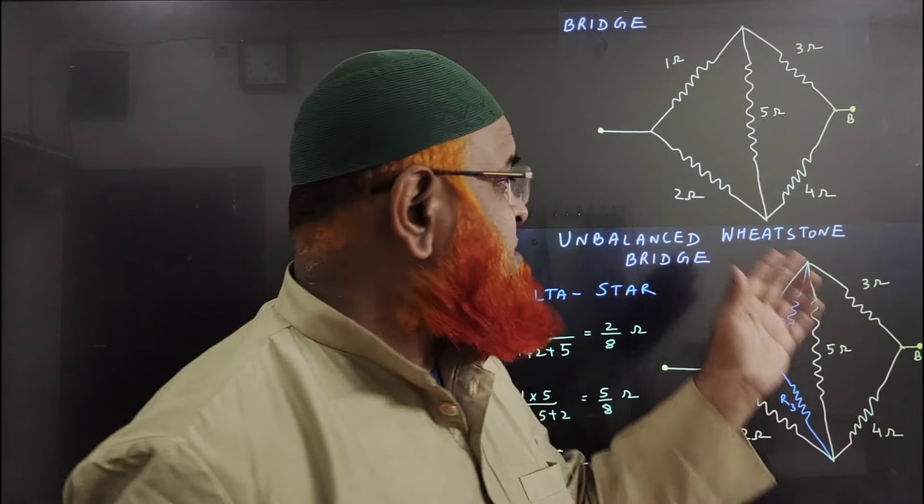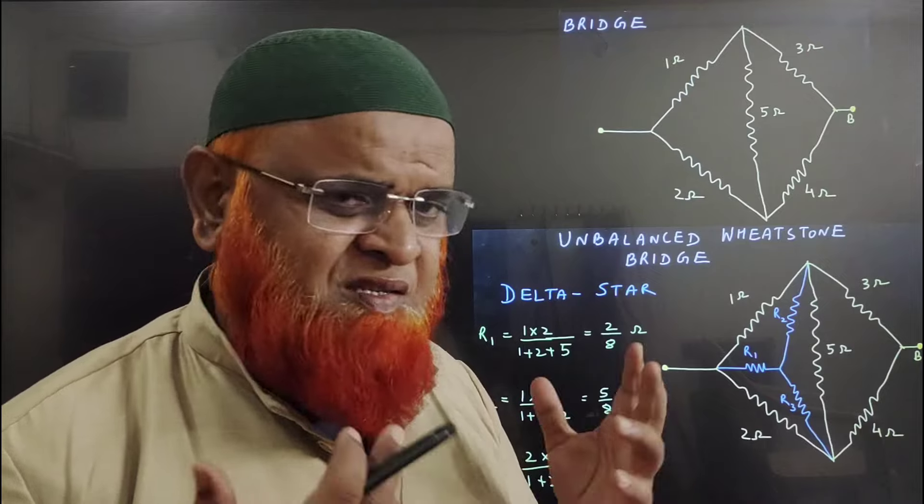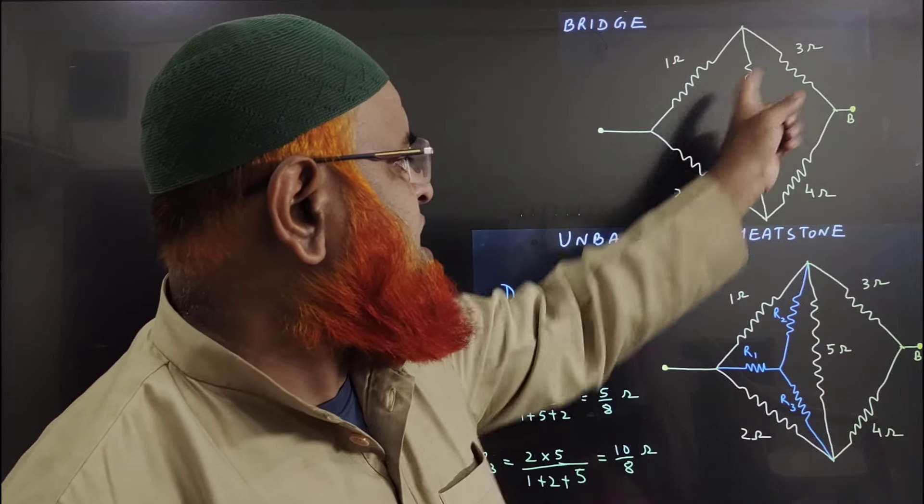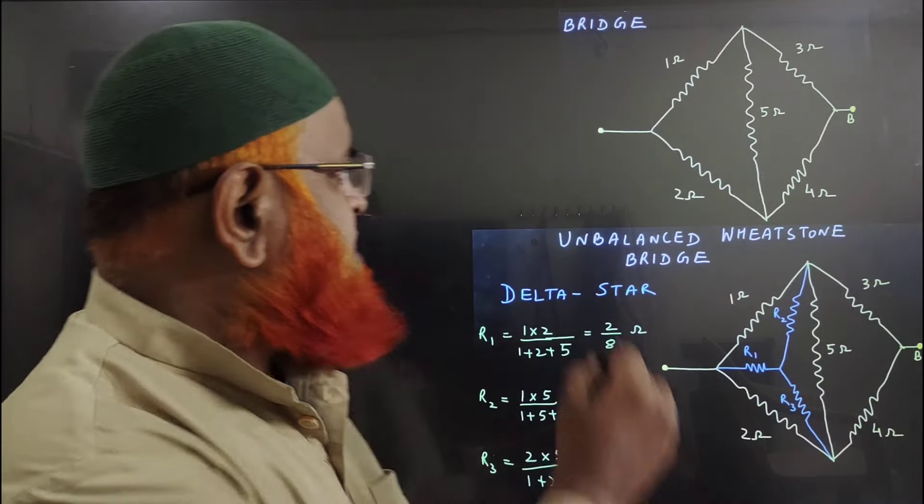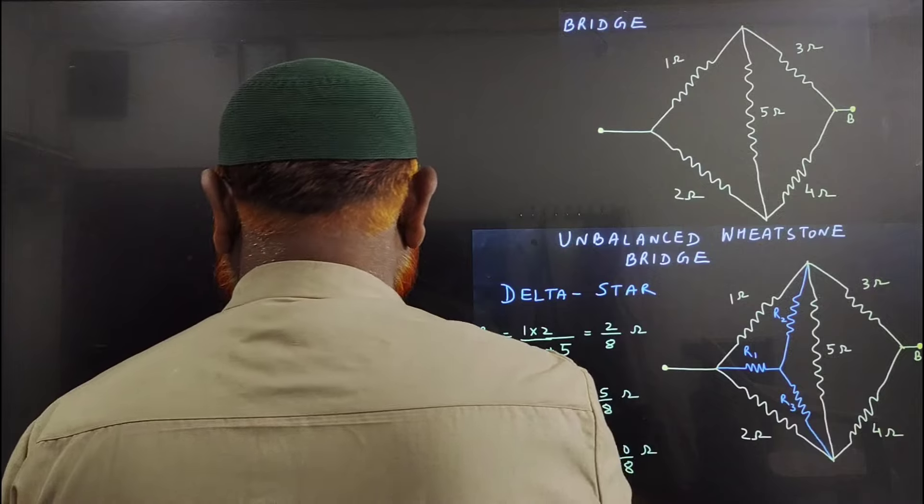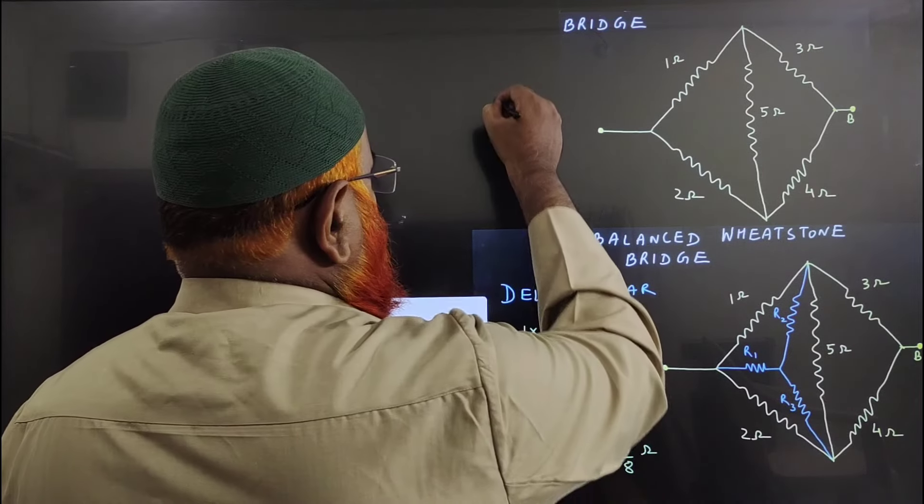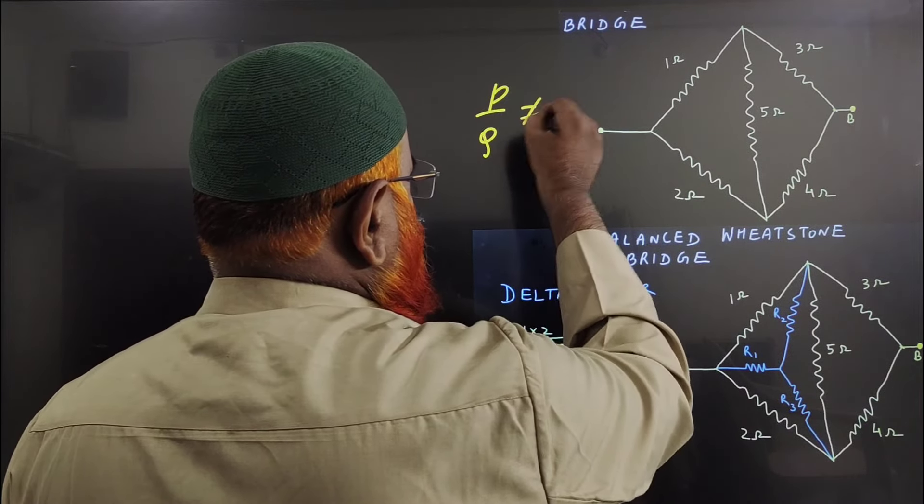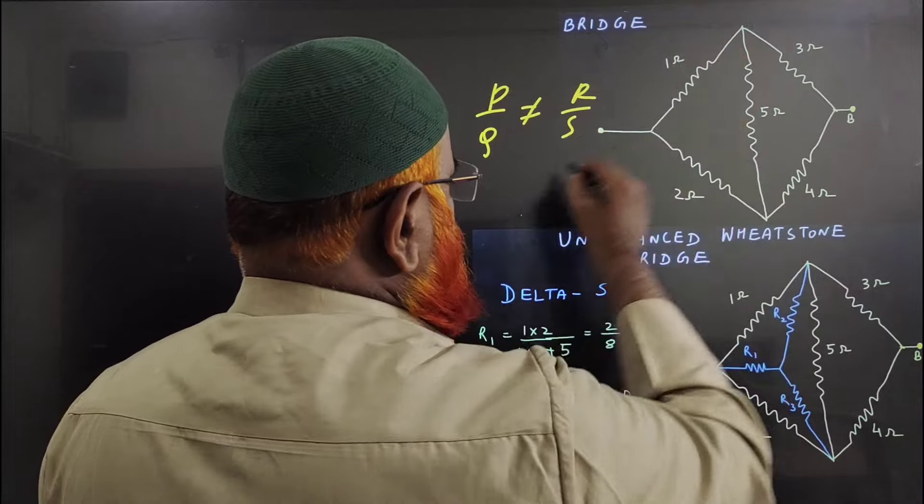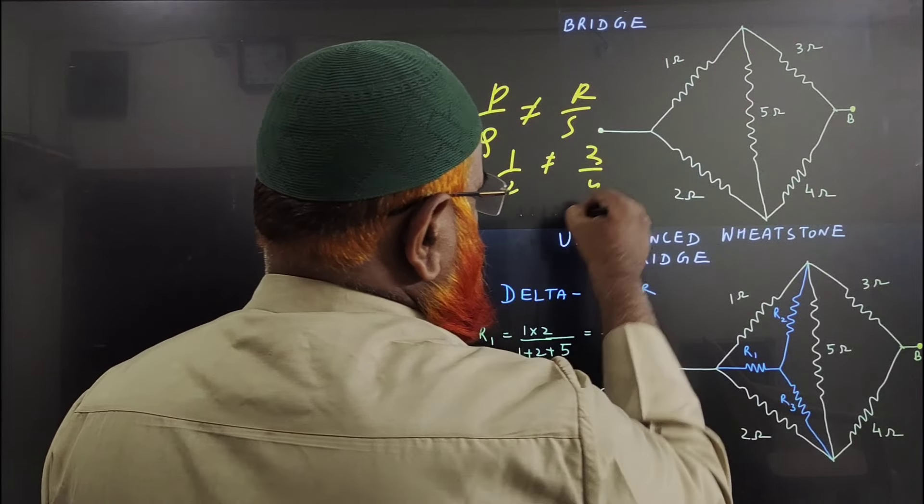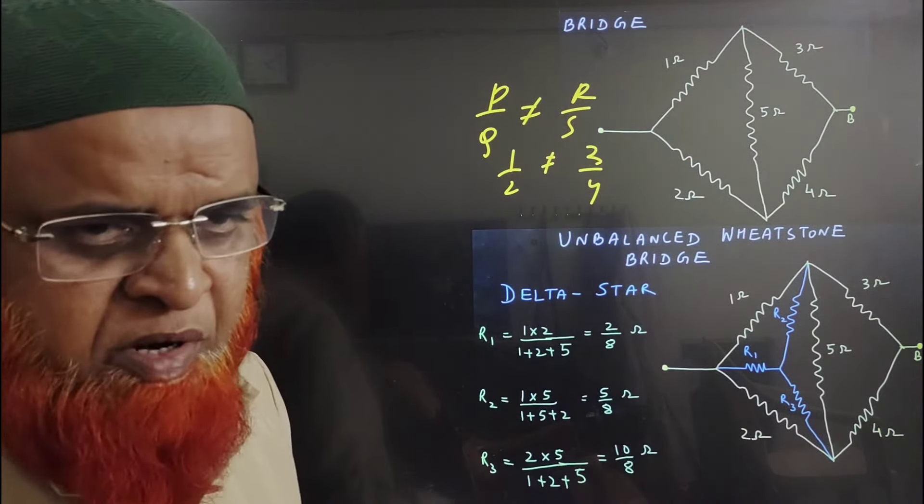My dear friends, how to solve this unbalanced Wheatstone bridge? This is an unbalanced Wheatstone bridge where P by Q is not equal to R by S. That means 1 by 2 is not equal to 3 by 4, that's why it's said to be unbalanced.